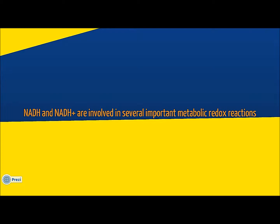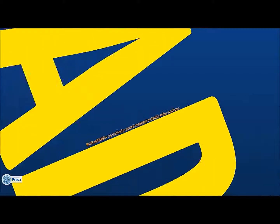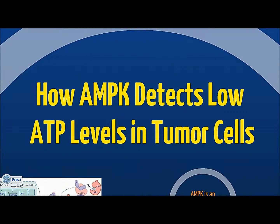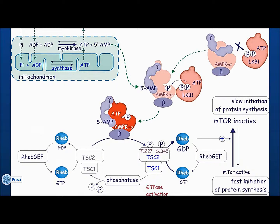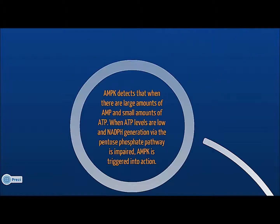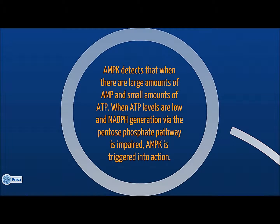When cells are under stress, it is more difficult for them to undergo metabolism and produce enough NADPH, which differs from NADH because it has one extra phosphate group, to fulfill the energy needed in the cell. In tumor cells, AMPK, or adenosine monophosphate kinase, has been found to regulate NADPH homeostasis to promote cell survival. AMPK is an AMP-activated protein kinase. AMPK can detect when the cell has large amounts of AMP present and not enough ATP. When ATP levels are low and NADPH generation via the pentose phosphate pathway is impaired, AMPK is triggered into action.